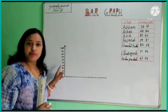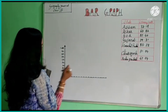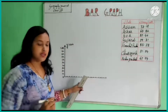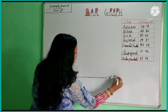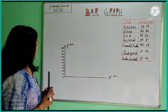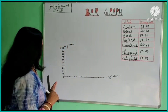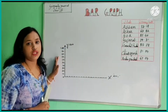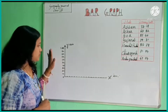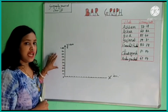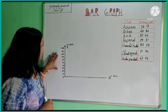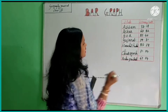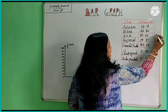This vertical line represents the y-axis and this horizontal line represents the x-axis. Now we choose a scale on the vertical axis in order to determine the height of the bars. So first of all we have to choose a scale for the vertical axis, or we can say for the y-axis. Our highest value is Goa and the lowest is Bihar.